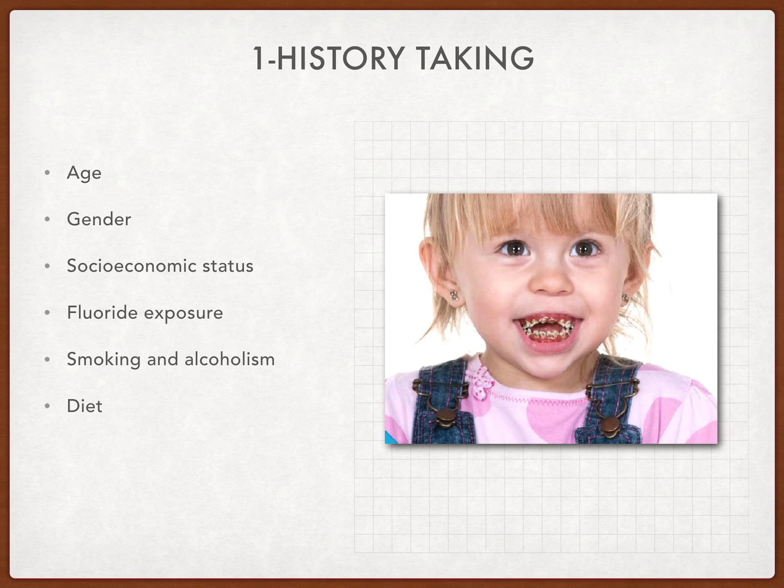Diet is a very important factor that determines carious lesion initiation, progression, and severity. The amount and frequency of carbohydrate intake determines susceptibility. Patients who consume more fibrous food like vegetables, or more protein-based diets like bodybuilders, are less susceptible to caries because they consume fewer carbohydrates.